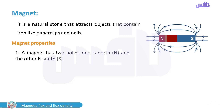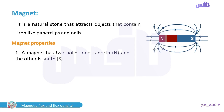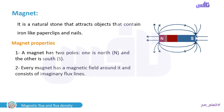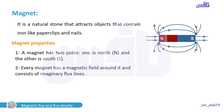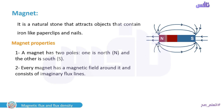Magnet properties: number one, a magnet has two poles — north and south. Number two, every magnet has a magnetic field around it consisting of imaginary flux lines.